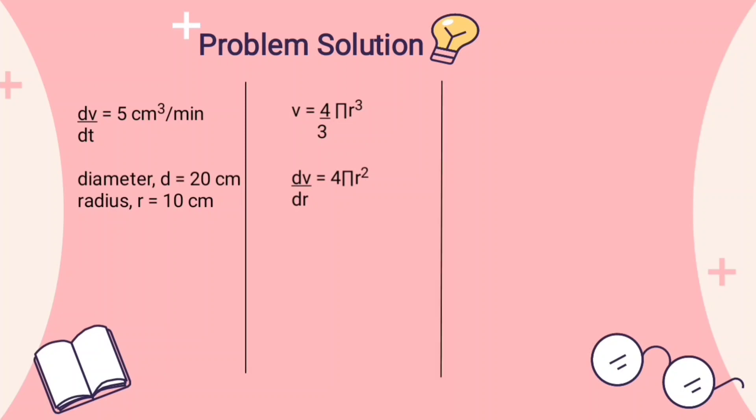And we get dv/dr = 4πr². dr/dt equals dr/dv times dv/dt.